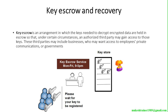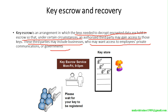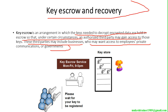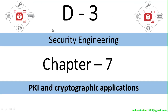Next is key escrow and key recovery. Key escrow is an arrangement in which keys needed to decrypt encrypted data are held in escrow, so that under certain circumstances an authorized third party may gain access to those keys. These third parties may include businesses that want access to employee private communications. The key is registered and held for authorized recovery.